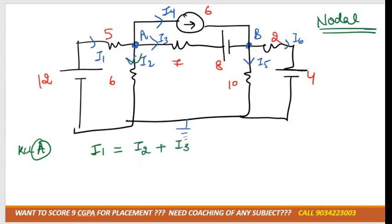So I1 from 0 to VA would be 0 minus VA. We have to take the second sign of the battery, plus 12, divided by 5. Then I2 is moving from VA to 0, so it would be VA minus 0 divided by 6.